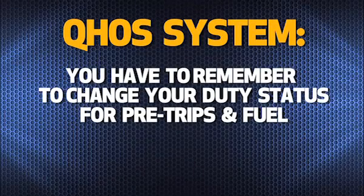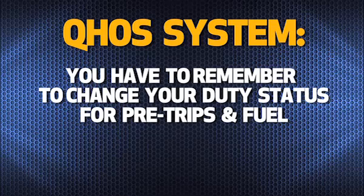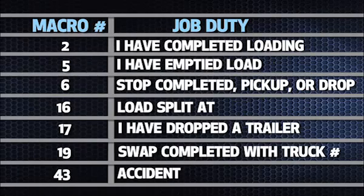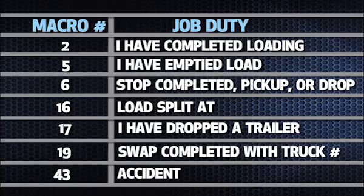With the QHOS system, you have to remember to change your duty status to Line 4 when you start your pre-trip inspection or fuel. You'll be in log violation and subject to disciplinary action if there's no time logged at the start of your day for your pre-trip inspection, and each time you swipe your fuel card. As always, log it as you do it. When you perform job-related tasks such as the pre-trip, fueling, loading, unloading, splitting, swapping, and dropping or hooking to a trailer, make sure to manually change your duty status to Line 4. The QHOS system will not automatically change your status as you send in related macros. Werner audits the system to verify the Line 4 time associated with each of these job duties. If no Line 4 time is recorded with the macros you send, you'll be in log violation and subject to the Log Violation Progressive Disciplinary Policy.